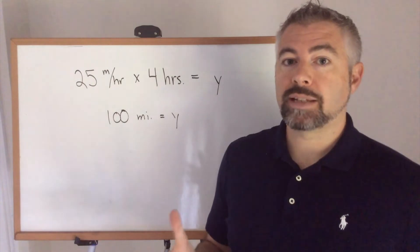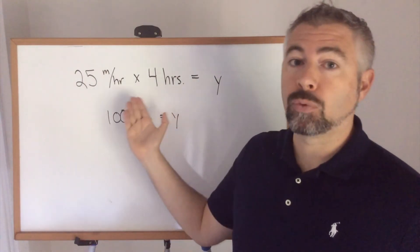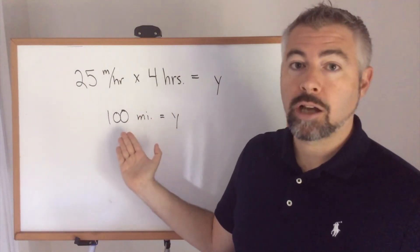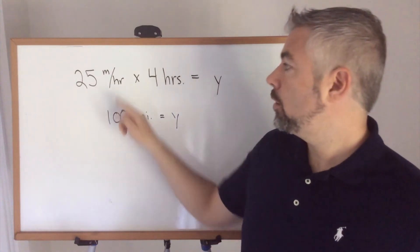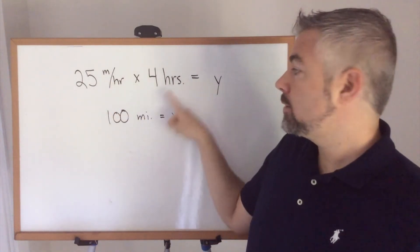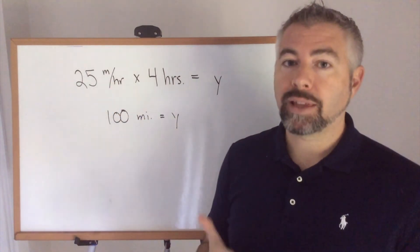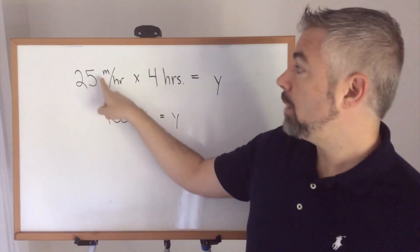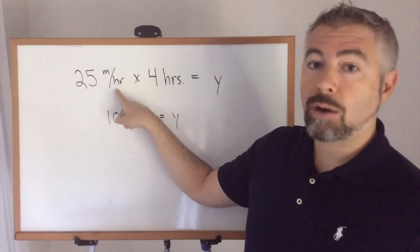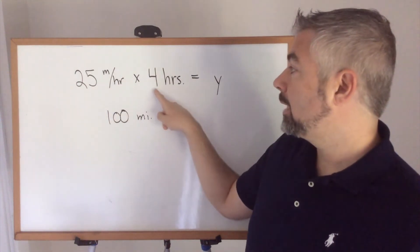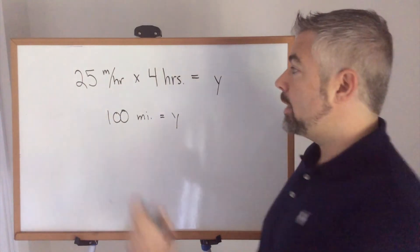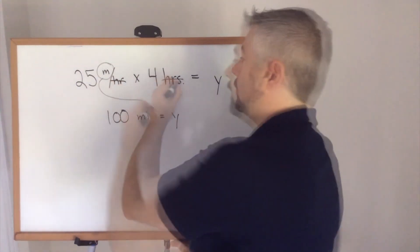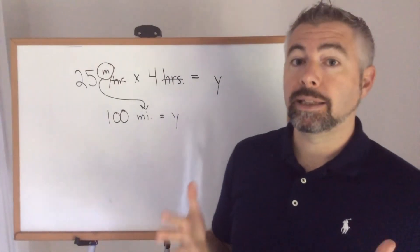The calculation here is pretty simple: 25 times 4 equals 100. But what's tricky is how do we go from this unit and this unit to this unit? That's where thinking about it as fractions comes into play. Since my units here are miles per hour and I'm multiplying by the unit hours, these actually cancel out, and my final unit is miles.